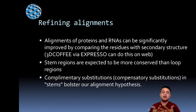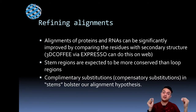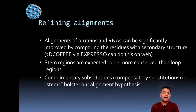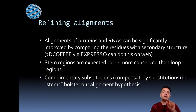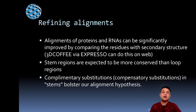Stem regions are expected to be more conserved than loop regions. The reason is that if one change happens in the stem region, a complementary change in the other paired region is also needed — requiring two mutations. Since two simultaneous mutations are less likely than one, stem regions are much more conserved. In loop regions, a change doesn't have much impact on the RNA's secondary structure, since the RNA functions primarily for structure rather than coding.